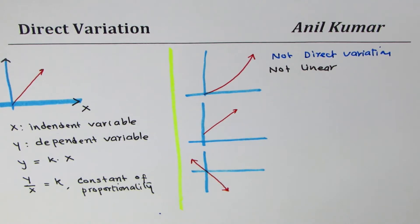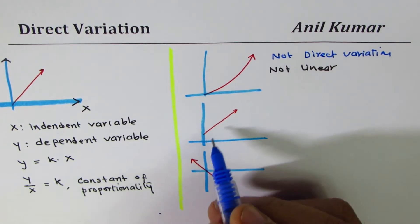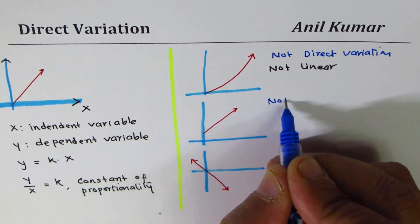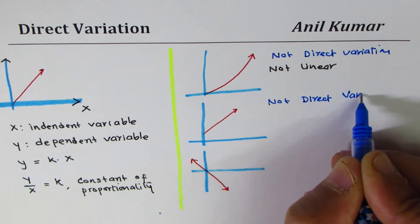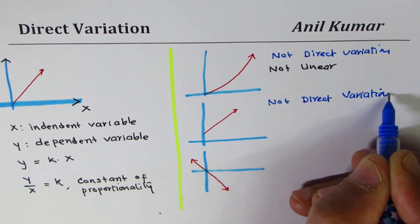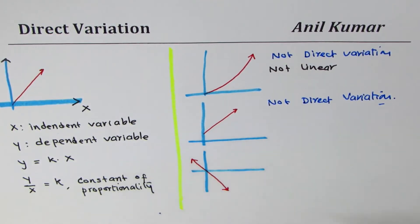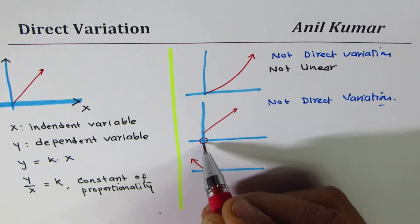The second example is again not direct variation. Can you tell me why? It is linear, but it does not go through origin. That is why.